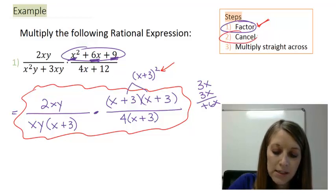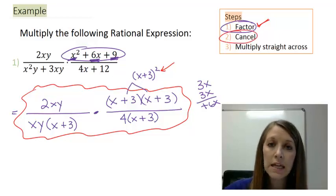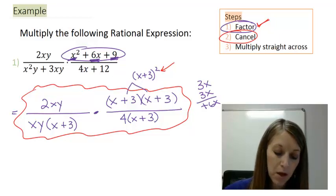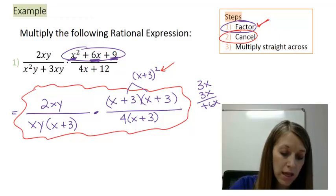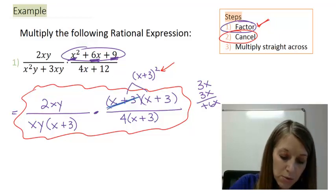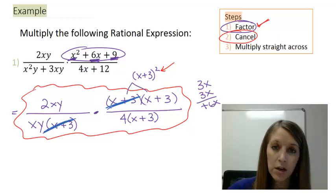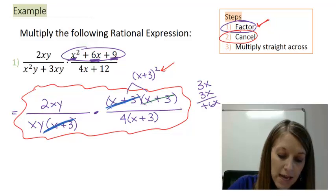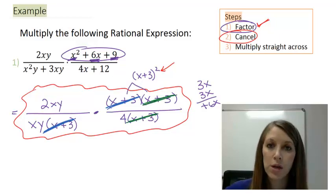So that moves to my next step of cancel. And I can cancel any identical factors as long as it's between the numerator and the denominator. So if I look at this, I have an x plus 3 here, and I can cancel it with an x plus 3 here.